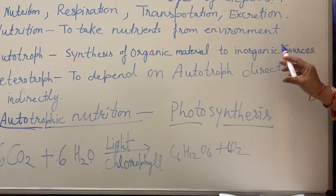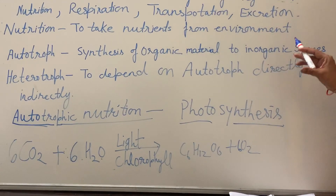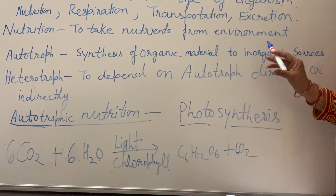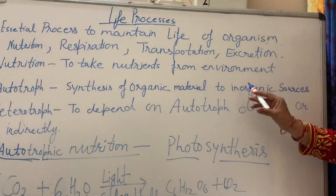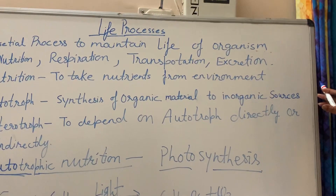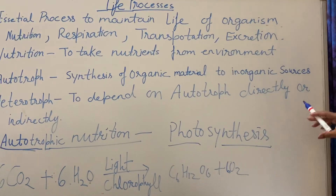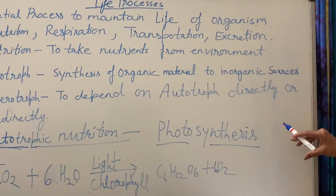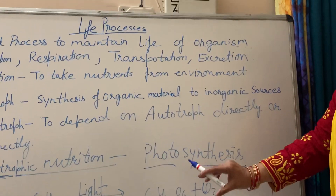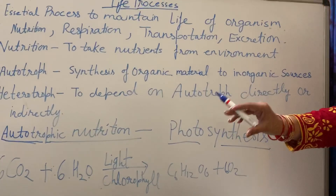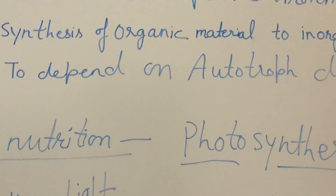Green plants are considered autotrophs and are known as producers. Green plants, in the presence of carbon dioxide, water, sunlight, and chlorophyll, form glucose. That is why green plants are considered producers, and this process is known as photosynthesis, because light is used as a source of energy to synthesize glucose from carbon dioxide and water.